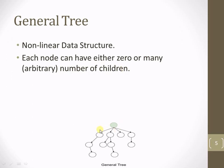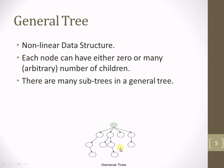Here you can see that the root node is having 4 child nodes. This node is having a single child node, and this node is not having any child nodes — that is 0 child nodes. So the number of child nodes has no restriction, and as a result there are many subtrees available in the general tree.